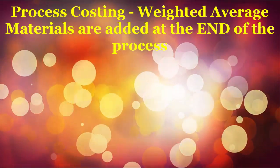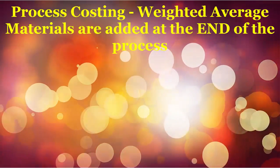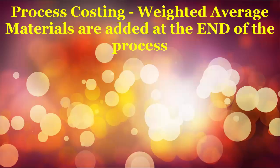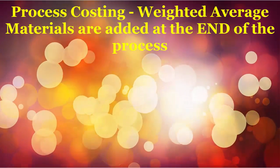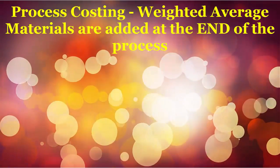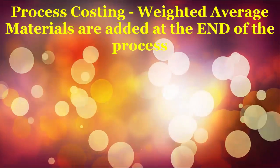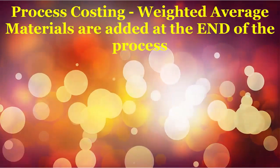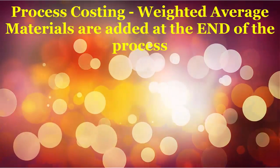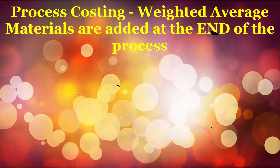In this video we're going to look at process costing using the weighted average method, with units in beginning inventory and units in ending inventory. We're going to handle materials a little differently this time — we're going to add the materials at the end of the process. Typically that would be in a second department such as packaging, but to avoid complicating this with transferred-in units, we'll just pretend all materials are added at the end.